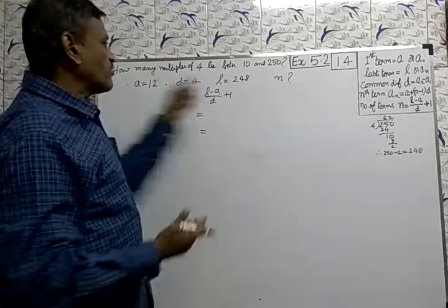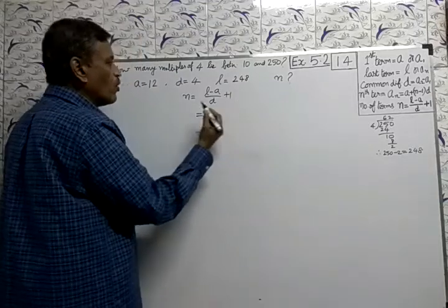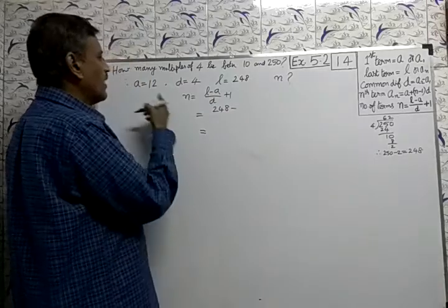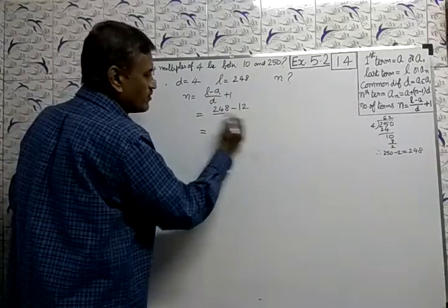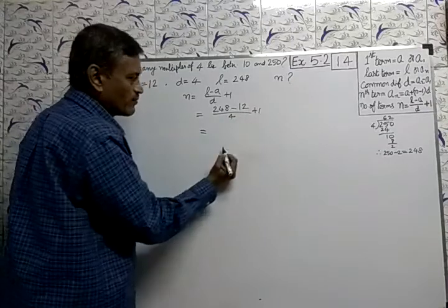The formula for how many: N equals L minus A divided by D plus 1. What is L? 248. A is 12. D is 4. Plus 1.